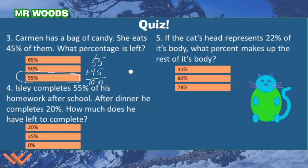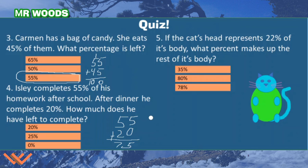Number four: Isley completes 55% of his homework after school. After dinner, he completes 20%. How much does he have left to complete? We add those percentages: 55% plus 20% is 75%. Now I subtract 75 from 100, or I can check: 25 plus 75 is 100. So he has 25% left. Remember — counting by 25 is like counting quarters: 25, 50, 75, 100.